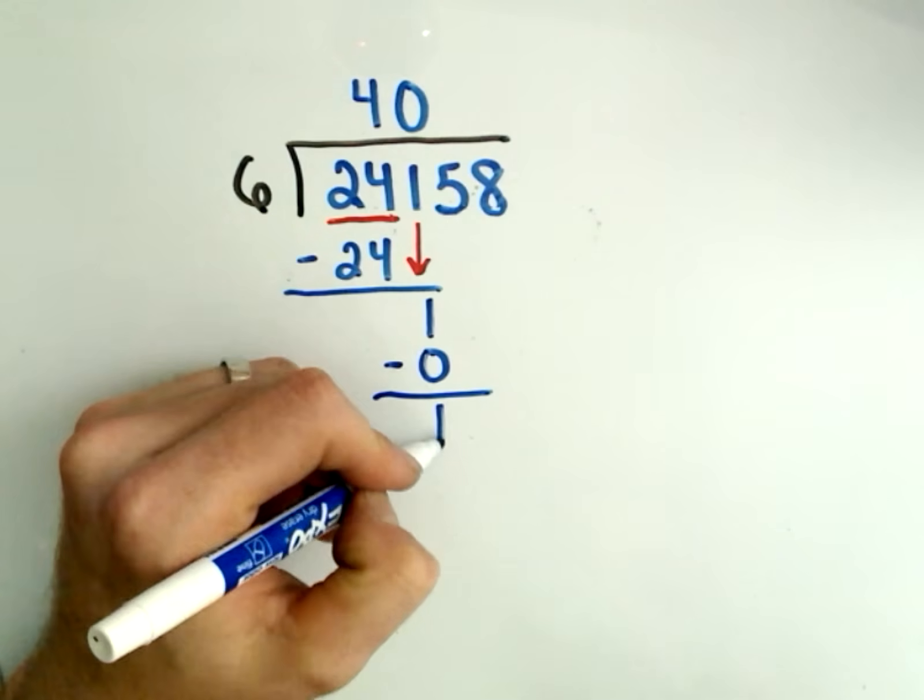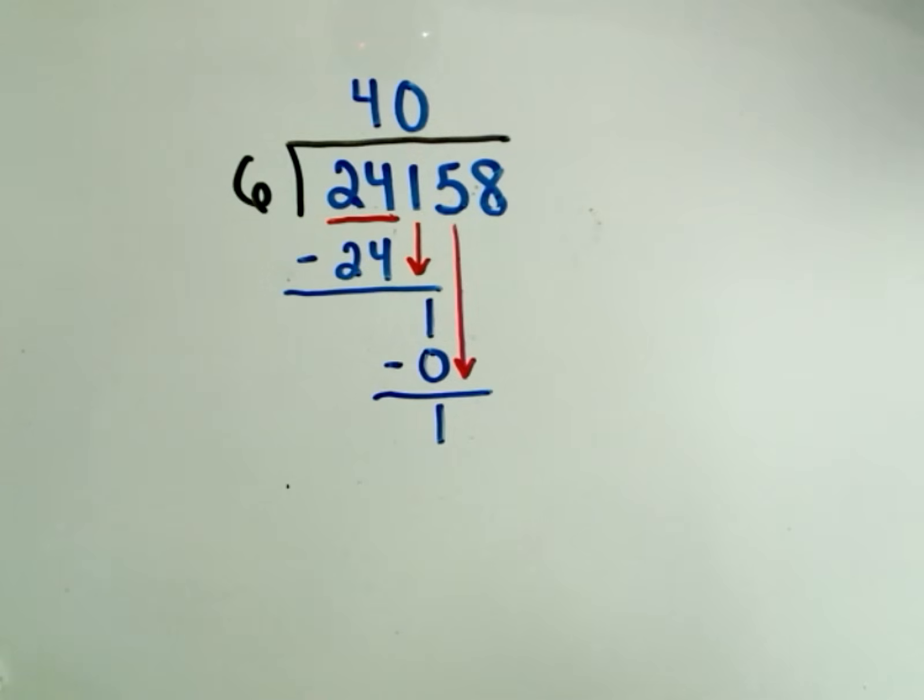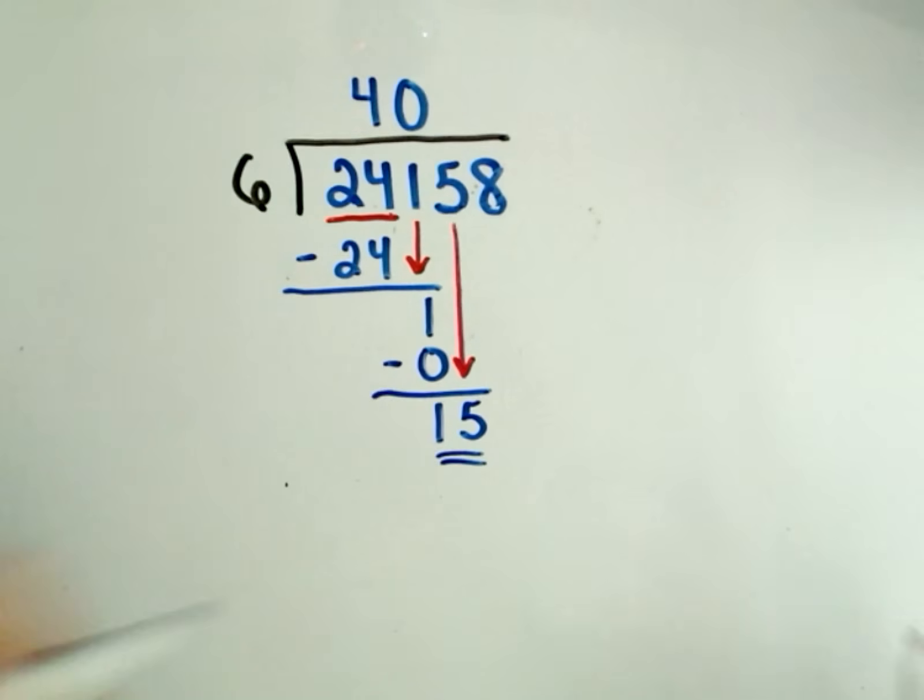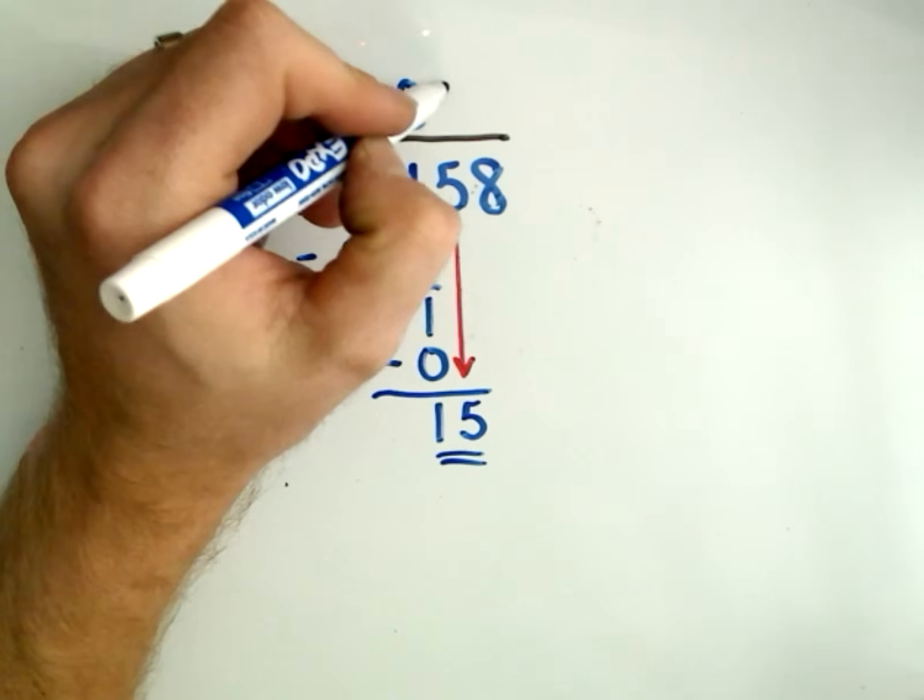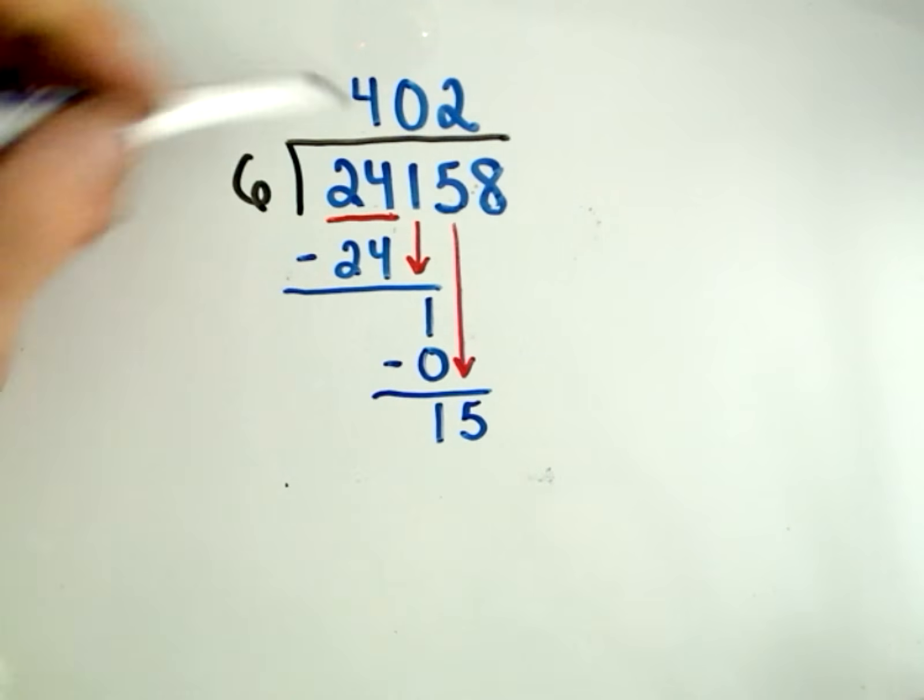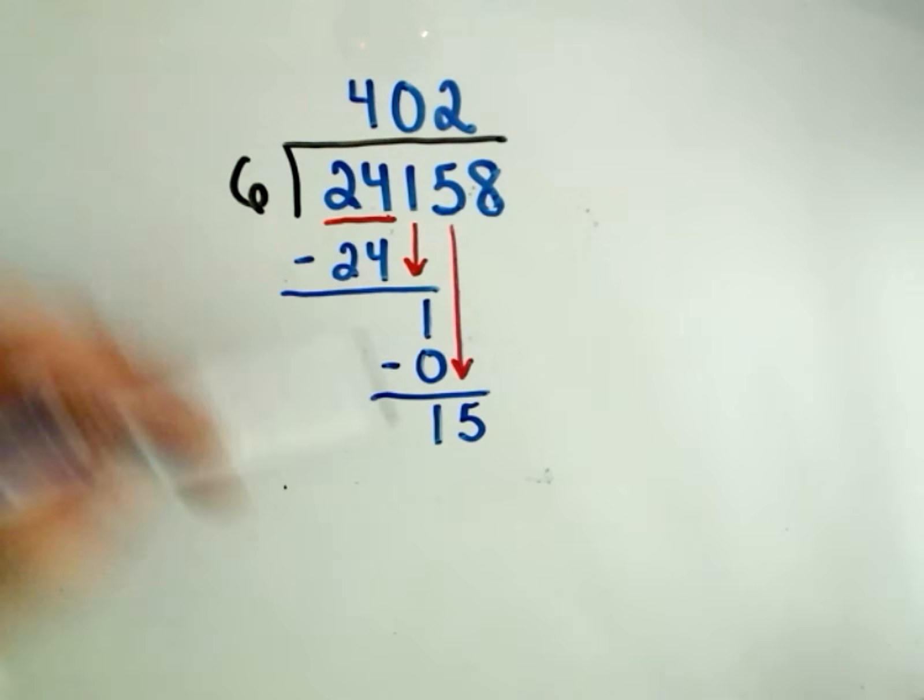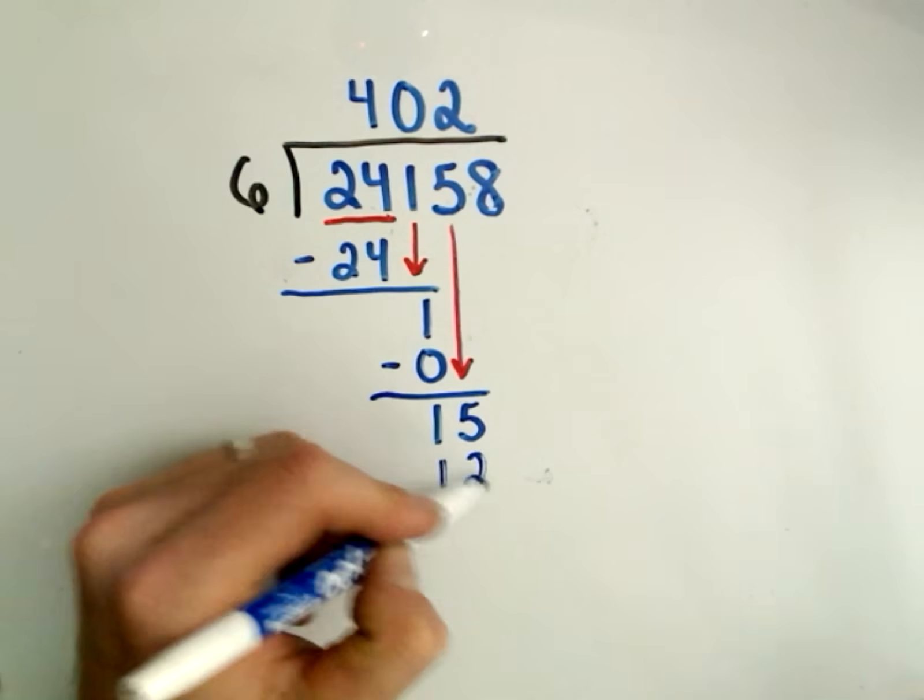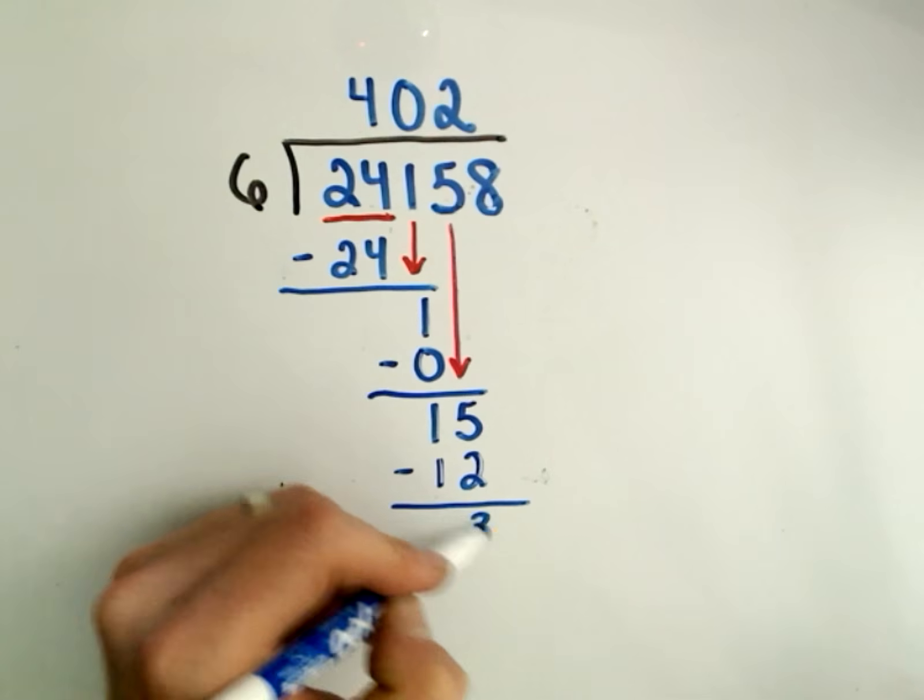And then I do the same thing, I drop down the next number which is going to be a 5. Okay, so now I've got the number 15. Well, 6 will go into the number 15, and I believe it'll do so twice without being too big. 2 times 6 is 12. 3 times 6 is 18, which is bigger than the number 15. So 2 times 6 is 12, and then we do the same thing, we just subtract. So 15 minus 12 is 3.